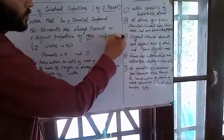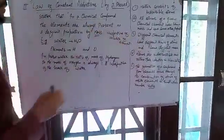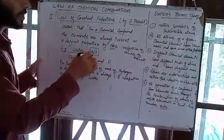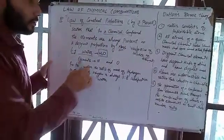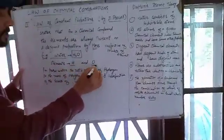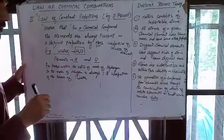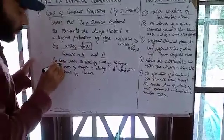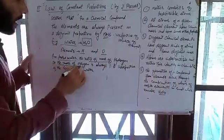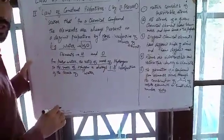For example, water H₂O is a chemical compound. The elements present in water are hydrogen and oxygen — two hydrogen atoms and one oxygen atom. In pure water, the ratio of mass of hydrogen to mass of oxygen is always 1:8, irrespective of the source of water.